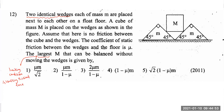Now let me mark the forces acting on capital M. If a system is in equilibrium, you need to consider the equilibrium of each object and balance the vertical and horizontal forces. There will be three forces acting on capital M: one being the weight, acting vertically downwards as Mg.